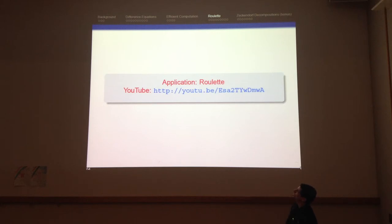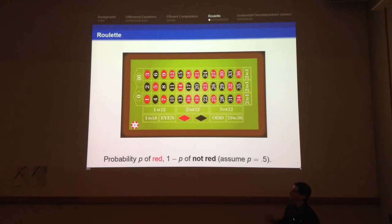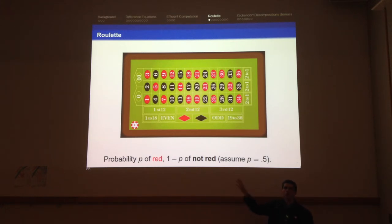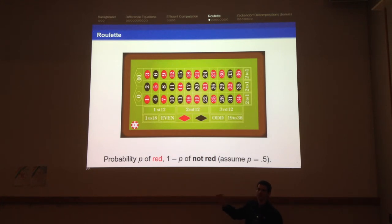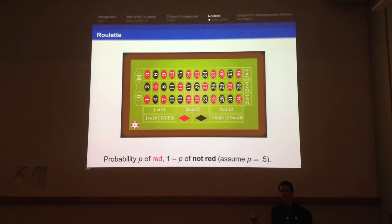Now I want to go to roulette. This is a slightly expanded version of a video I made with OIT several years ago. Here is what a roulette board looks like. For simplicity, you can only bet on red or not red. In the actual world Vegas has two greens — zero and double zero — so the probability of red is not quite one-half. But I'm feeling generous: I'll ignore the greens and assume the probability of red is exactly one-half, giving you a 50-50 chance on every bet. This is better odds than you'll get in Vegas.